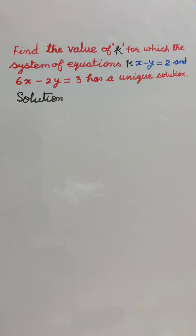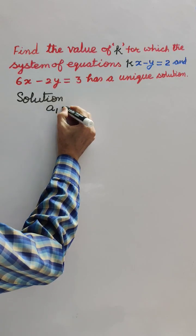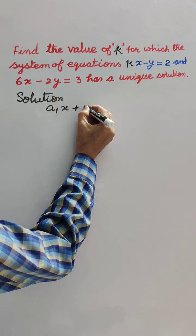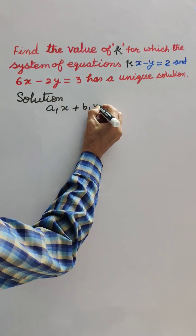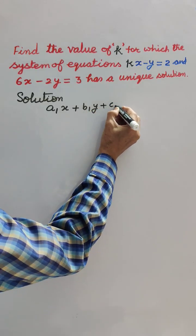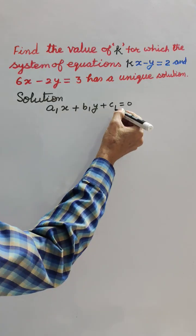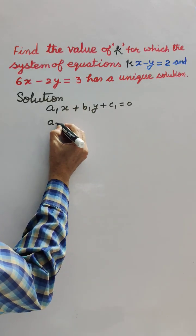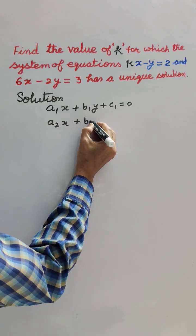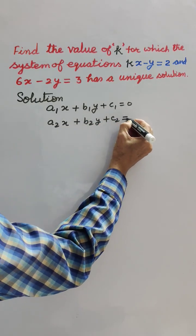We know that for a unique solution, if the equations are a1x plus b1y plus c1 equals 0 and the other equation is a2x plus b2y plus c2 equals 0.